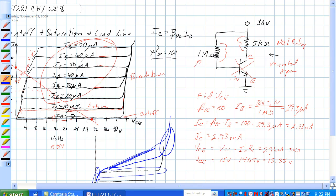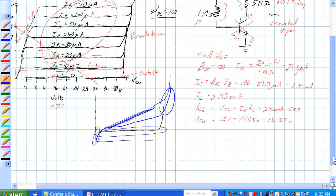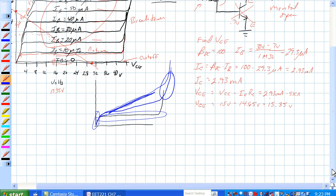Now, the ideal one here has no change in current with a change in base, but we know that's not true, because when the transistor, the current started flowing collector to emitter in the transistor, it actually heated up, and when it heated up it allowed more current to go through it.